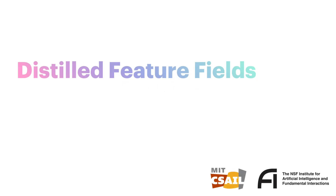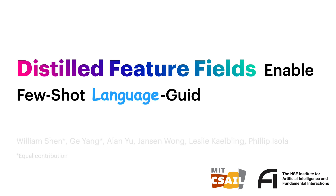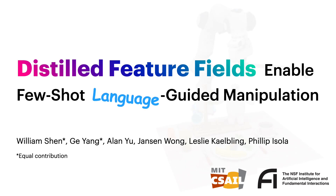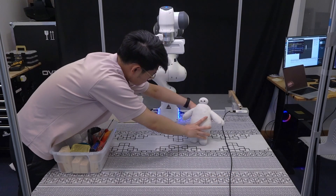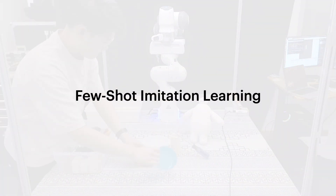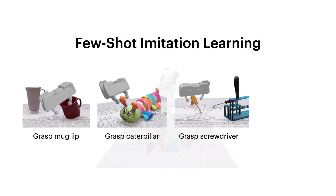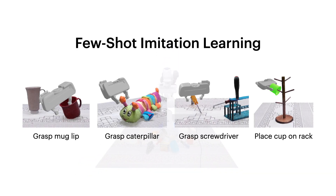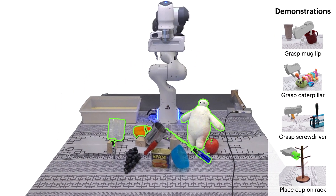We present Distilled Feature Fields Enable Few-Shot Language-Guided Manipulation. In this project, we consider a few-shot imitation learning scenario where a robot has been given a few demonstrations of how to grasp and place objects. Given this small set of demonstrations, we want to enable the robot to generalize to an open set of objects that come in different shapes and poses, and sometimes from different object categories.